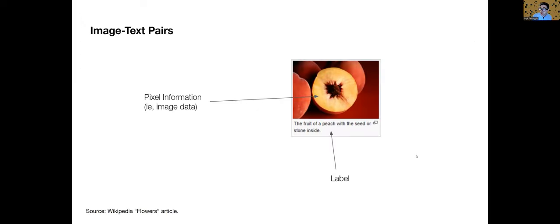Likewise, when we are looking at an image generated by a diffusion model, we are mapping data. We are mapping the pixel information of an image, such as this, from the Wikipedia Flowers article, to a label. The fruit of a peach with the seed or stone inside. This is your text. And this text is broken down, and this image's categories are categorized according to the text. Fruit, peach, seed, stone. So these images get associated with the clusters in those categories.